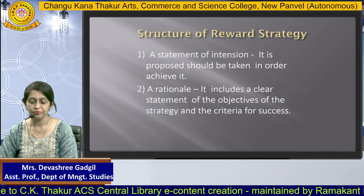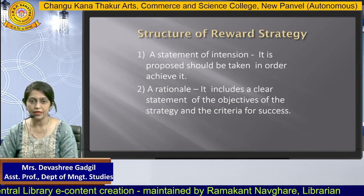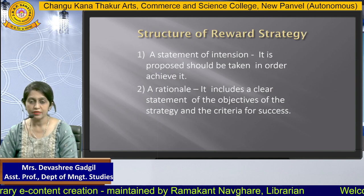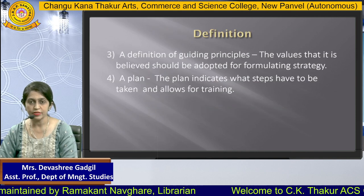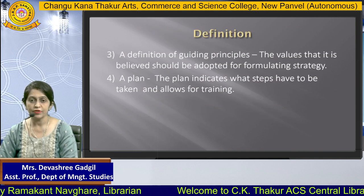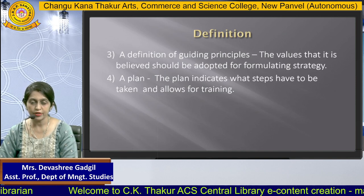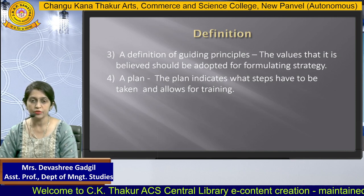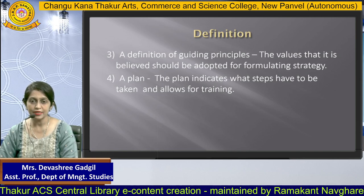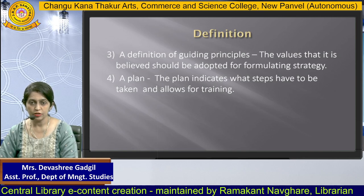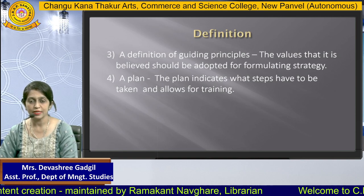The structure of reward strategy consists of the following. First, a statement of intention — what is proposed and what steps should be taken to achieve it. Second, it is rational — it includes a technical statement of the objectives of the strategy and criteria for success. Third are guiding principles — the values, rules, and regulations adopted for formulating strategies in the organization. The plans indicate what steps have to be taken and allow training to be given to employees.